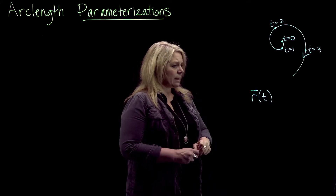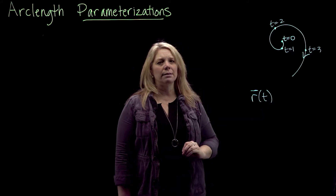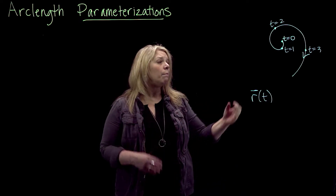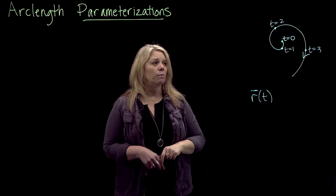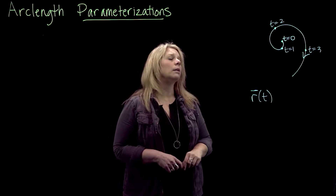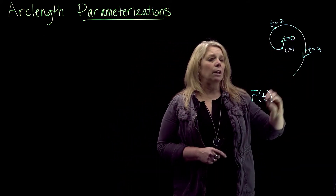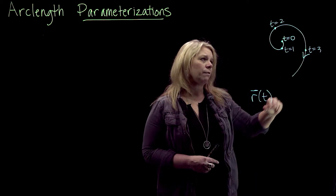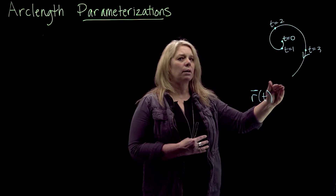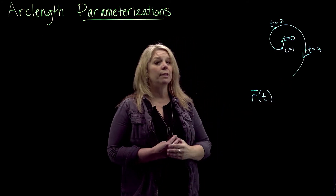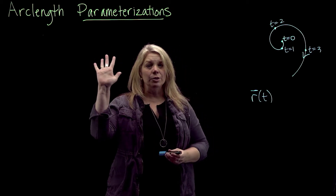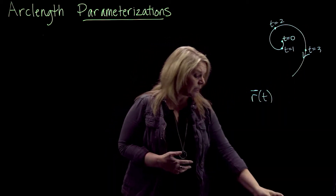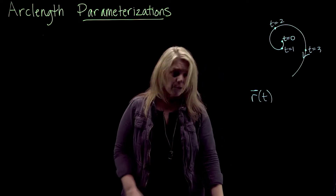The basic idea is that I have a parameterization of the curve that is really based on time and describes a kind of motion along this curve — maybe speeding up, or slowing down, or moving at a constant speed. It's really describing a particular motion along this curve. But if what I want to do is really describe the geometry of the curve, then I want to strip away that time component of that motion, and think about this curve more in terms of its geometry. That's really what an arc length parameterization is.